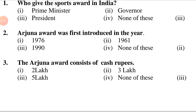The Arjuna Award was first introduced in the year blank. First option: 1976. Second option: 1961. Third option: 1990. Fourth option: none of these. The answer is 2nd option, 1961.